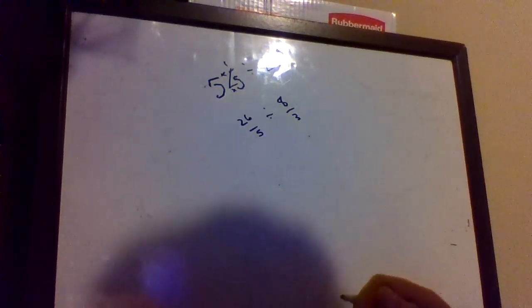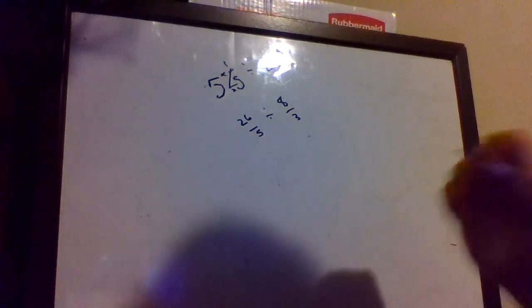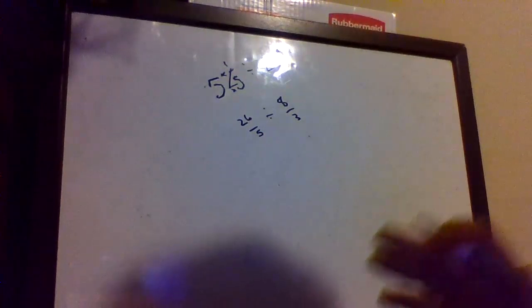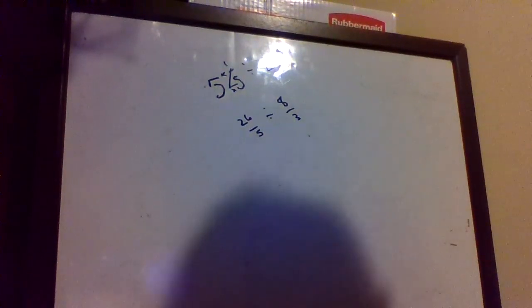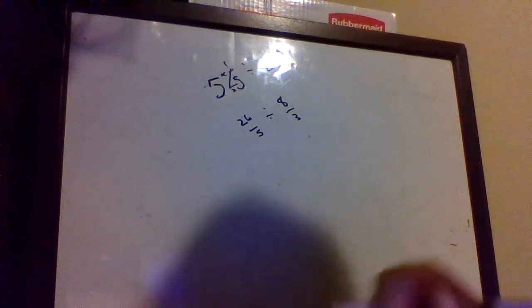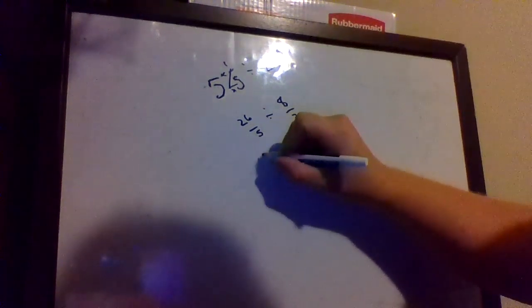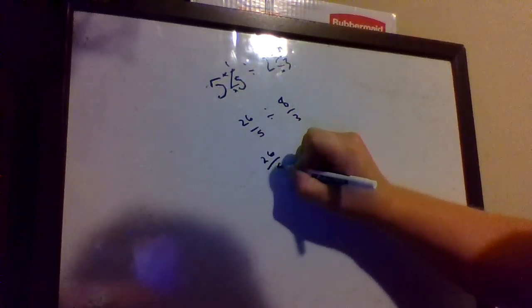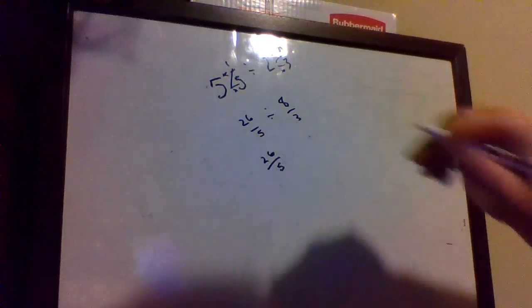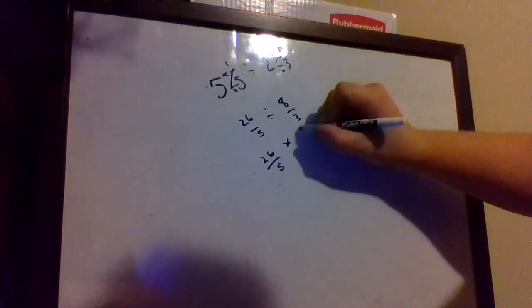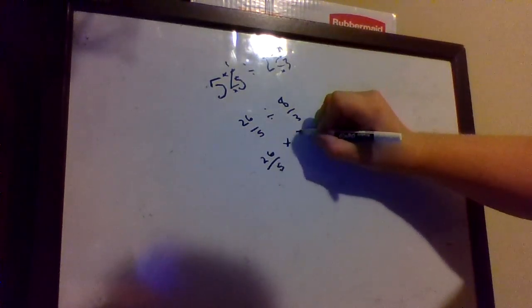Now we've got rid of our mixed numbers, so our next step is we're going to divide. So how do we divide fractions? Keep change flip, because that's the action. So we're gonna keep 26 over 5, we're gonna change division to the opposite, which is multiplication, and we're gonna flip 8 over 3 to become 3 over 8.